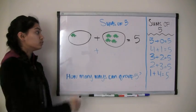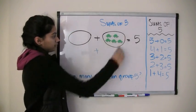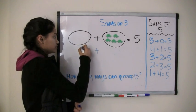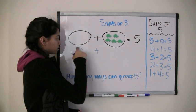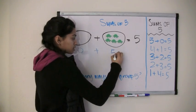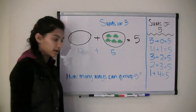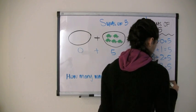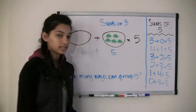And if we move our last turtle over, now we have zero turtles here. We have zero plus one, two, three, four, five turtles. So zero plus five equals five. And that's our last sum.